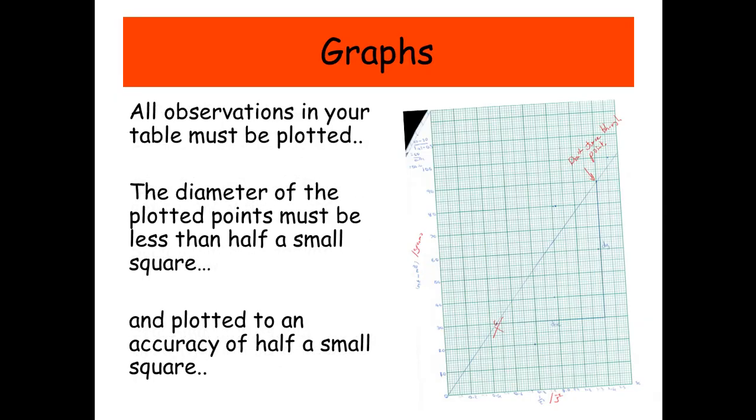All the observations that you've recorded on your table must be plotted. The diameter of the plotting points must be less than half a small square. So don't do massive blobs on your graph people, though most of you won't do that. And the points need to be accurate to about half a small square. Now normally what happens is the examiner will just probably measure about one or two. And then hopefully you should get it right.